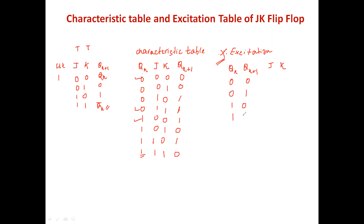Check the characteristic table and fill out the excitation table. For Q(n)=0 and Q(n+1)=0: looking at the characteristic table, there are two combinations where Q(n)=0 and output is 0. J is fixed at 0, but K may be 0 or 1. So J is fixed as 0 and K is a don't care.